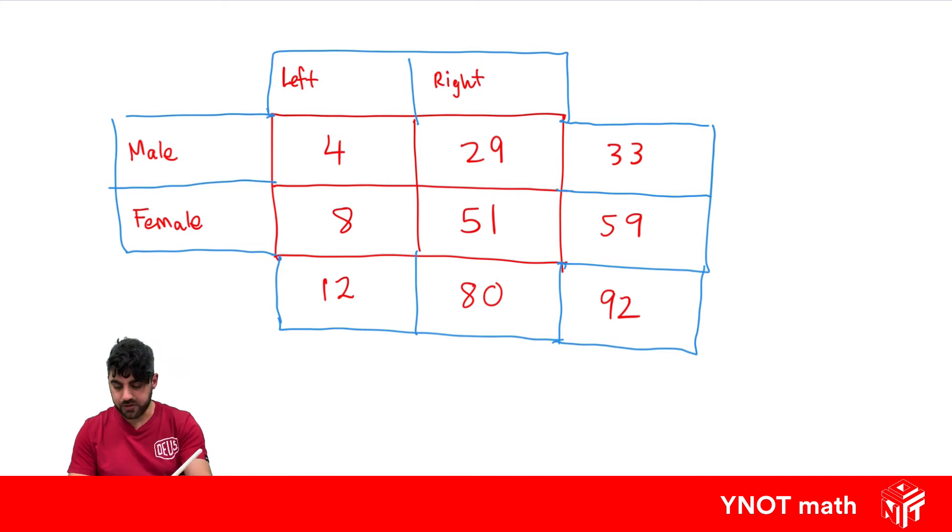Let's answer a few questions. The first question is: how many are male or left-handed? To work this out, we can take the total males and the total left-handed. There are 33 males in total and 12 left-handed in total. But we're counting the males that are left-handed twice - 4 plus 29 is 33, and 4 plus 8 is 12. So we've counted that 4 twice. We subtract off that 4, which gives us 41 people who are male or left-handed.